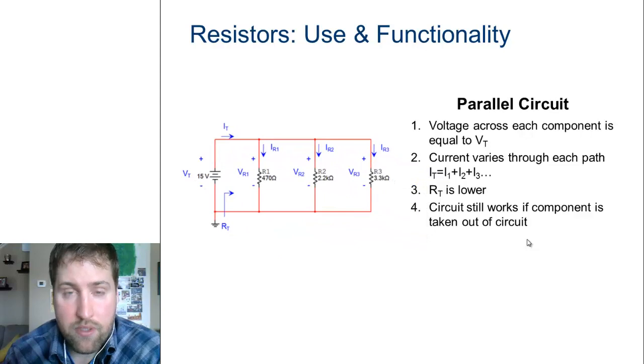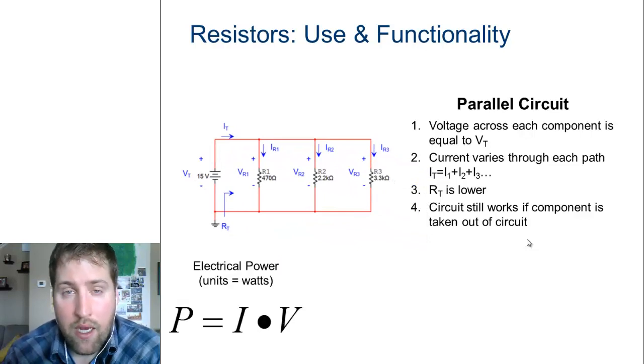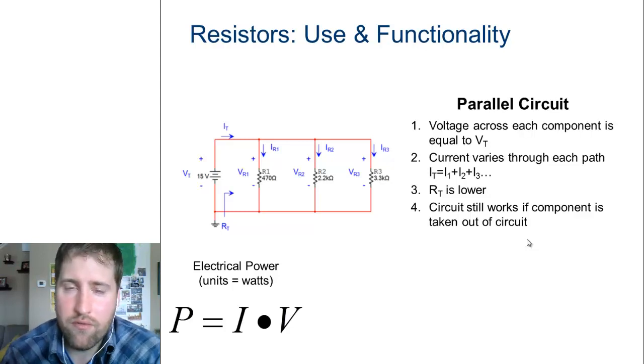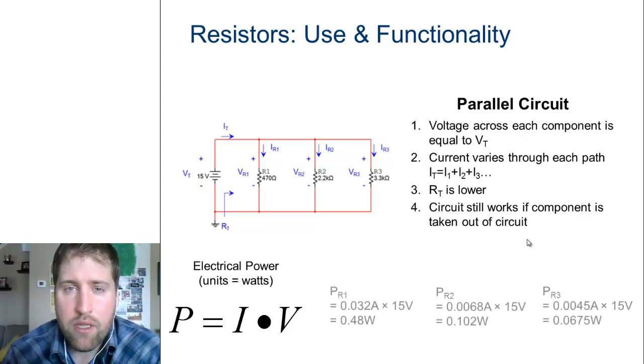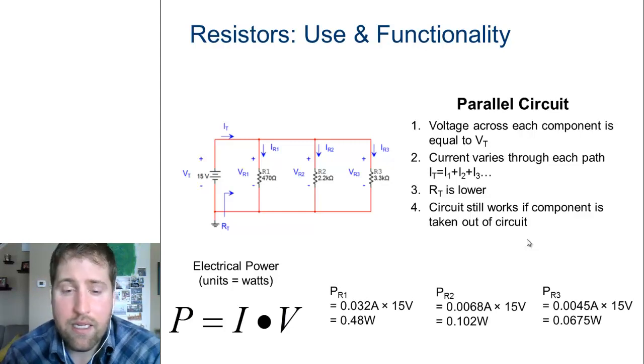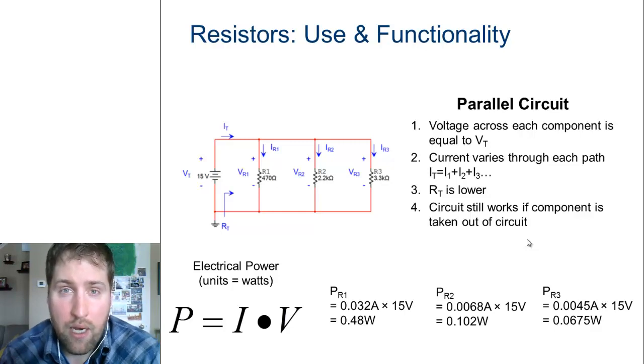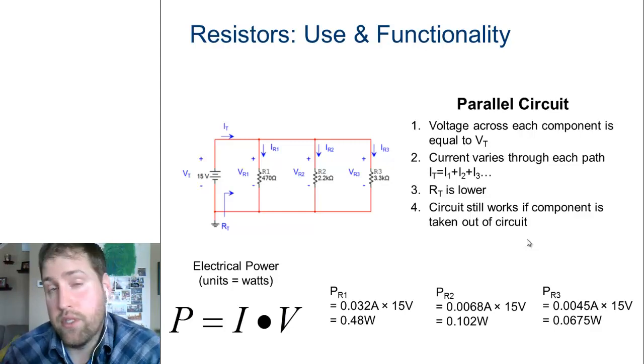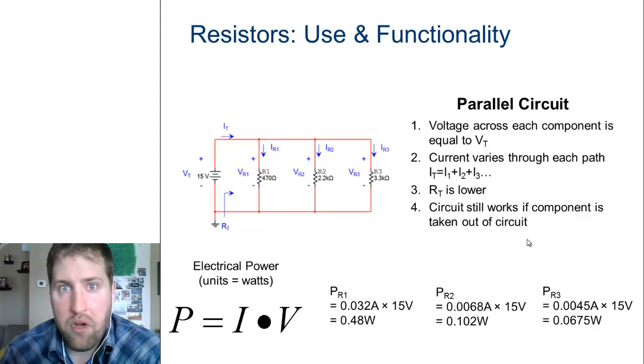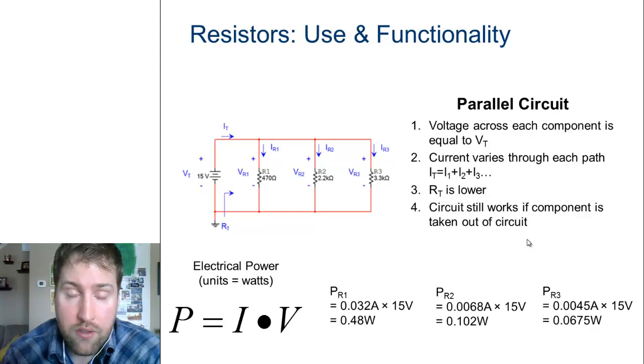We talk about each one of these components in constant electrical power. So why would we ever use a resistor in the first place? Well, if we look at the power supply to each one of our resistors, let's say resistor number one right now has a calculated electrical power use of 0.48 watts.